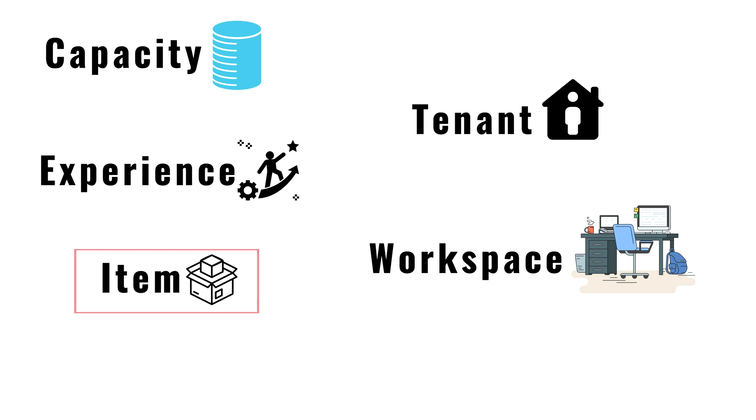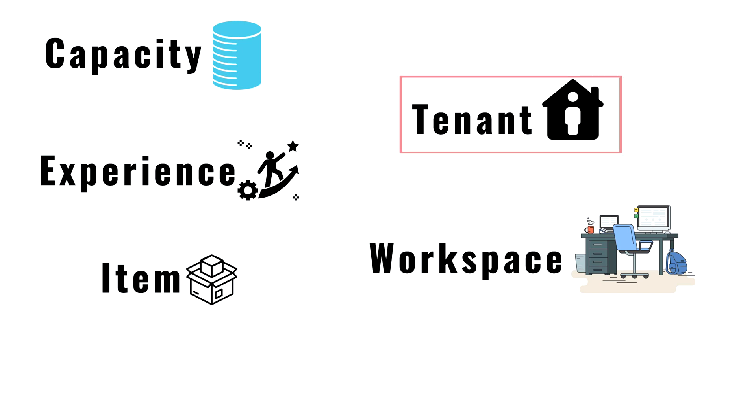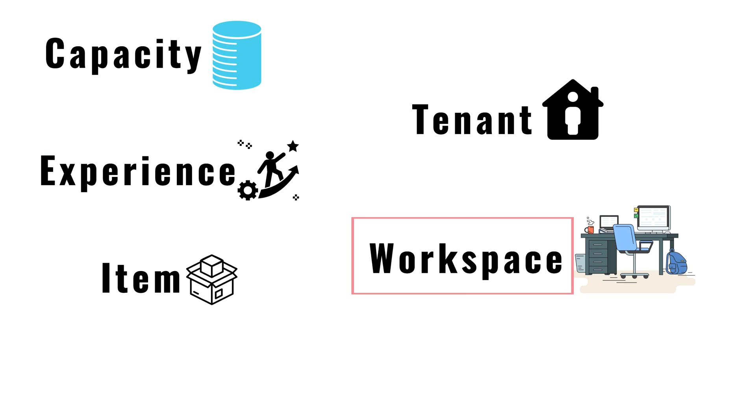An Item is a set of capabilities within an experience. Users can create, edit, and delete any of the items. For example, in Power BI you can create data flows, datasets, reports, and dashboards; in Data Engineering, items include the lakehouse, notebooks, and Spark jobs. A Tenant is a single instance of Fabric for an organization, aligned with an Azure Active Directory. A Workspace is a collection of items that brings together different functionalities in a single environment designed for collaboration.